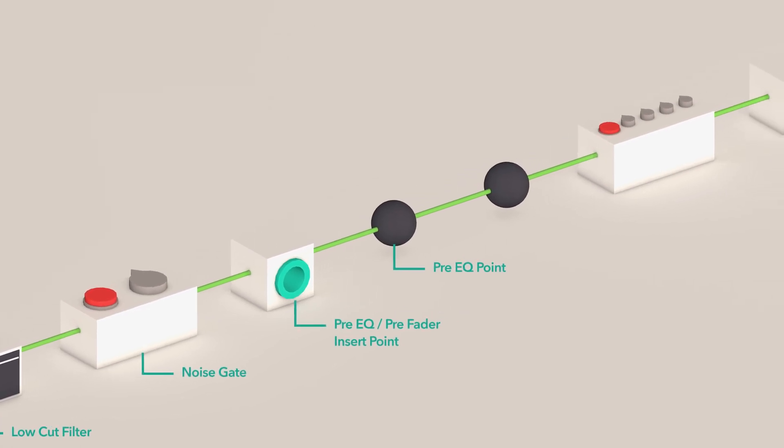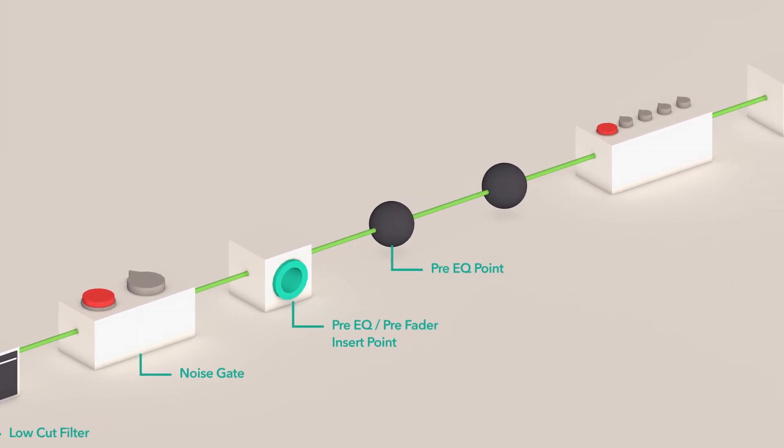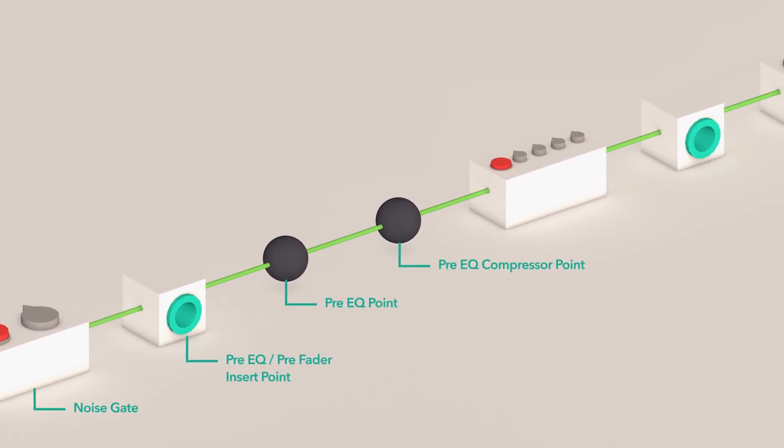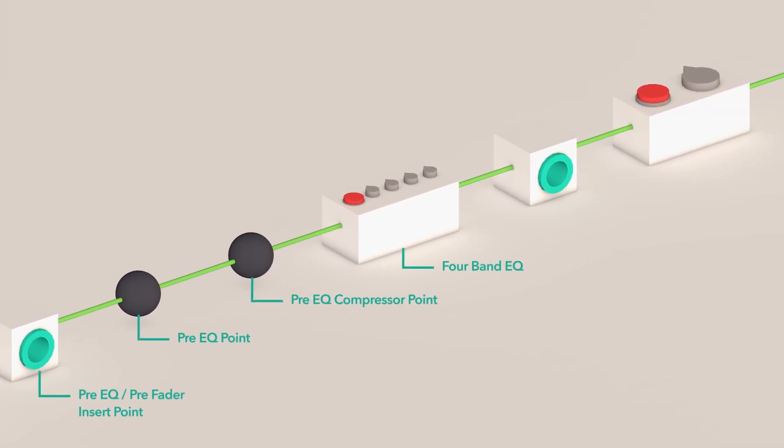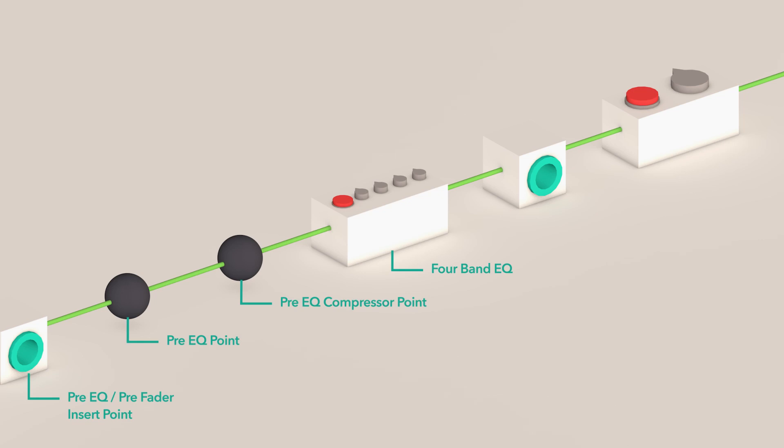The pre-EQ point is the point at which all pre-EQ taps are taken. The pre-EQ compressor point is where the compressor takes a signal prior to any EQ settings. The 4-band EQ is used to boost or attenuate specified frequencies on the channel.